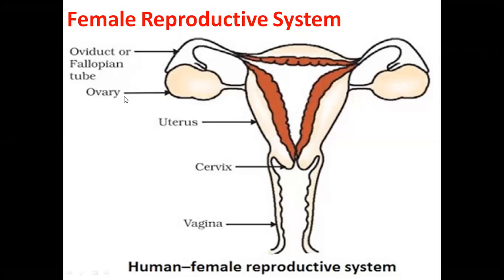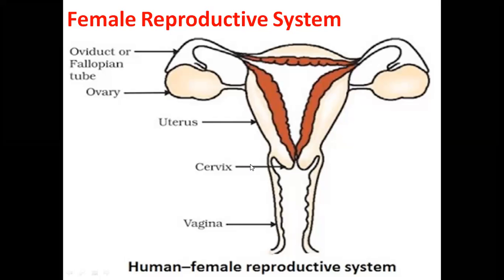You can see there are mainly these parts. This is the ovary, parovaries, which is the main site for the generation of female eggs, which are useful for reproduction. Then you can see this is the oviduct, also called the fallopian tube. This is the uterus. This is the cervix and this is the vagina. These are the main important parts. I'm talking about the basics of the female reproductive system here, not in too much detail. This is for students of class 10th and 11th who want to understand the basic female reproductive system.